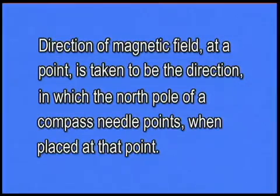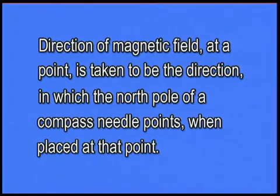Magnetic field is a vector quantity which has both magnitude and direction. So how do we find the direction of magnetic field? The direction of magnetic field at a point is taken to be the direction in which the north pole of a compass needle points when placed at that point. Let us try and find the direction of magnetic field lines of this magnet using compass needles.